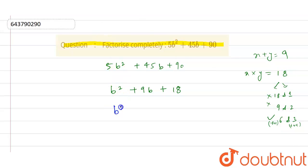So here the factor is b² + 6b + 3b + 18. Now if we will take b common from here, we get b(b + 6), and plus 3 common from here we get (b + 6).